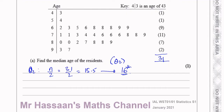Writing down the cumulative frequency: 1, then 1 plus 1 is 2, plus 9 is 11, plus 11 is 22. So I know the 16th term is in the 70s group. The last 69 is the 11th term, so counting on: 12th, 13th, 14th, 15th, 16th. The 16th term is 74, so Q2 equals 74. That's the median age of the residents.